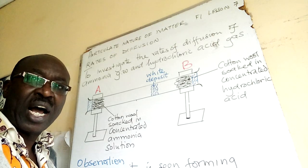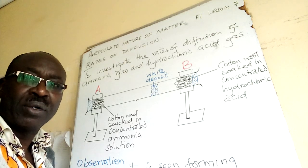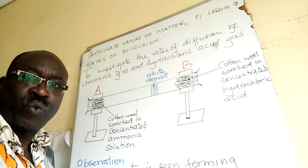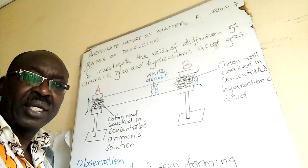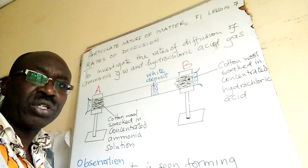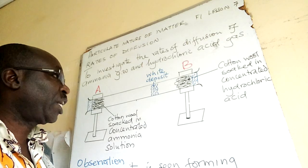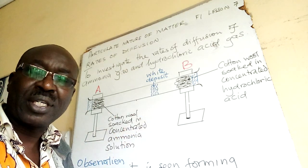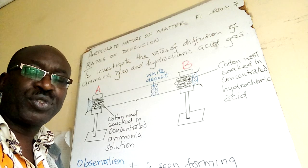We want to investigate the rate of diffusion of ammonia gas and hydrochloric acid gas. There are a few things that we need: a long tube with open ends, two corks, cotton wool, and separately two bottles of concentrated hydrochloric acid solution and concentrated ammonia solution. We also have stands to help us clamp the long tube.